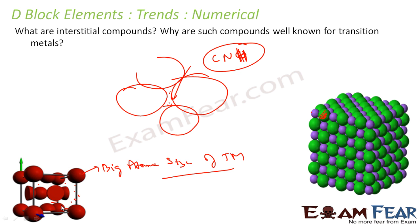This space is called interstitial space, and these compounds are called interstitial compounds. They are generally non-stoichiometric because the small atoms just lie somewhere here and there. Example: TiH₁.₇.